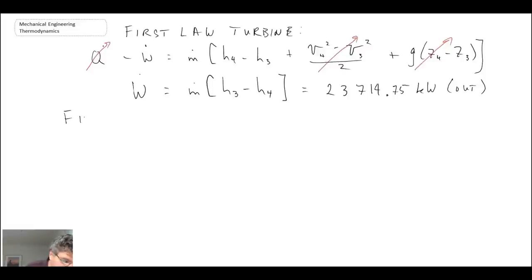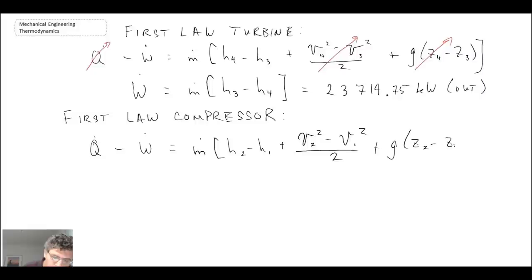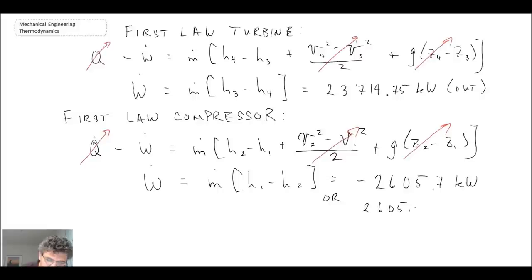Now we're going to look at the first law for the compressor. Again, writing out the first law, we can cancel out adiabatic. There's no kinetic energy and no potential energy. When we plug in the values for enthalpy, we get a negative number indicating we're doing work on the system, which makes sense for a compressor. That's 2605.7 kilowatts in.